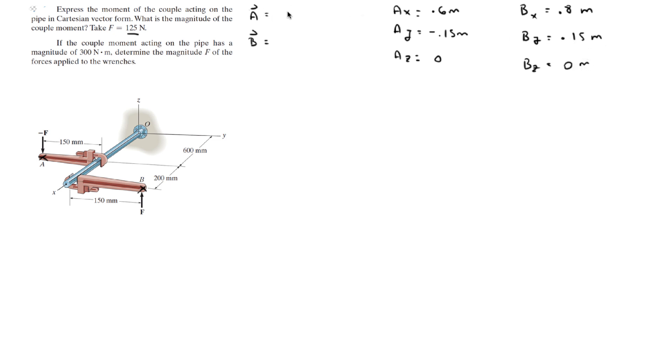So now you can write the Cartesian vector form, which is 0.6 in the I minus 0.15 in the J.